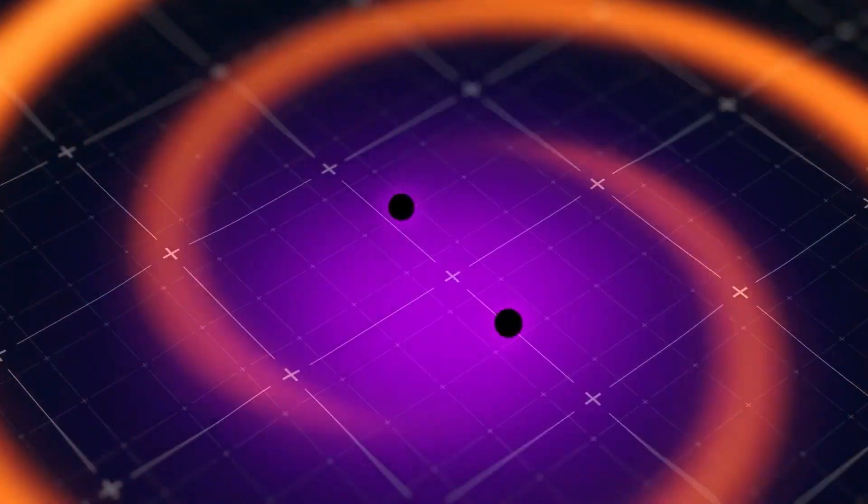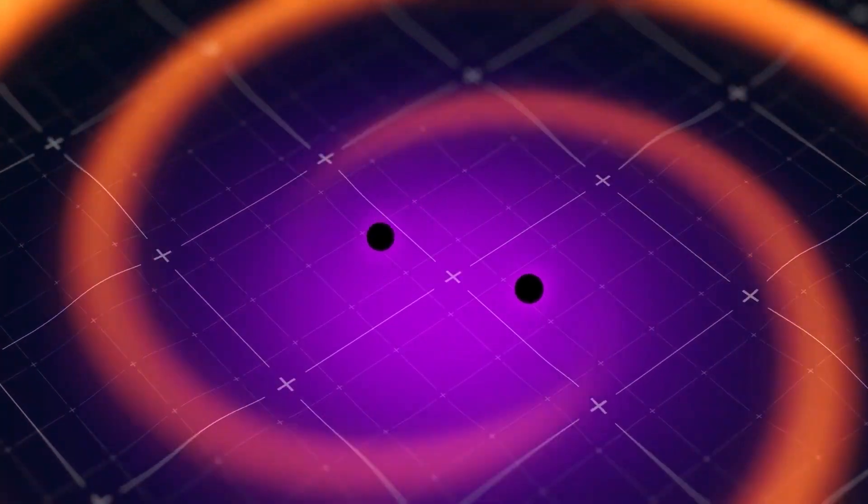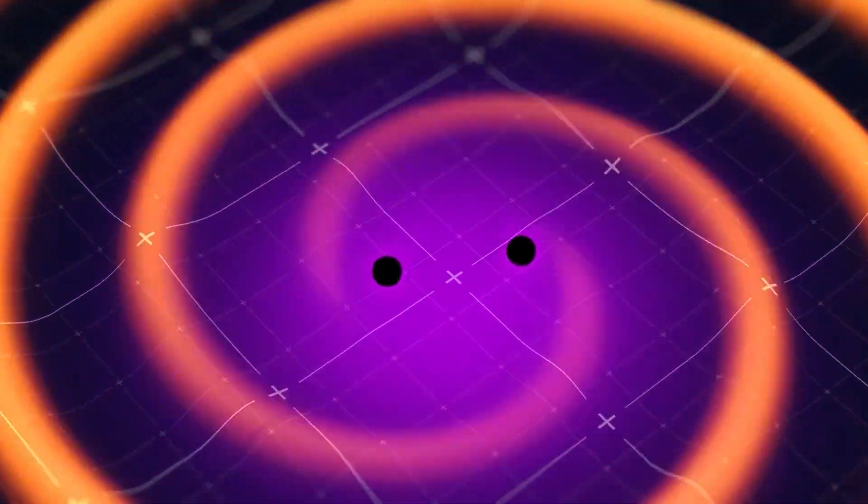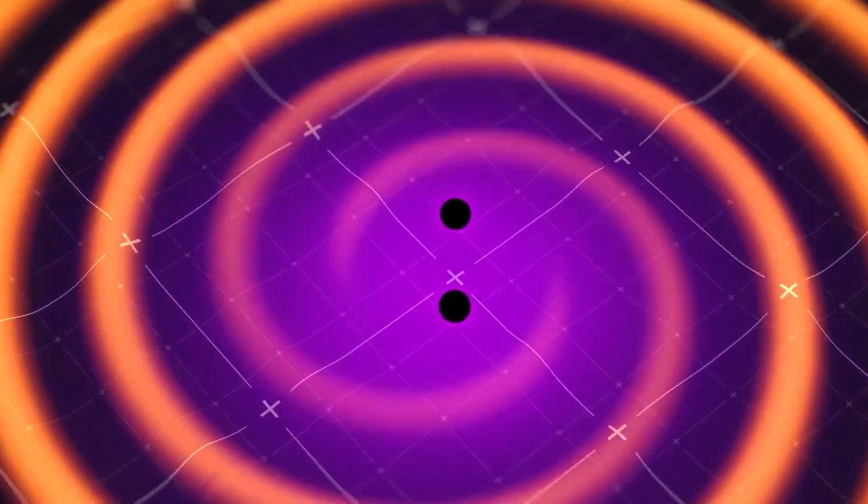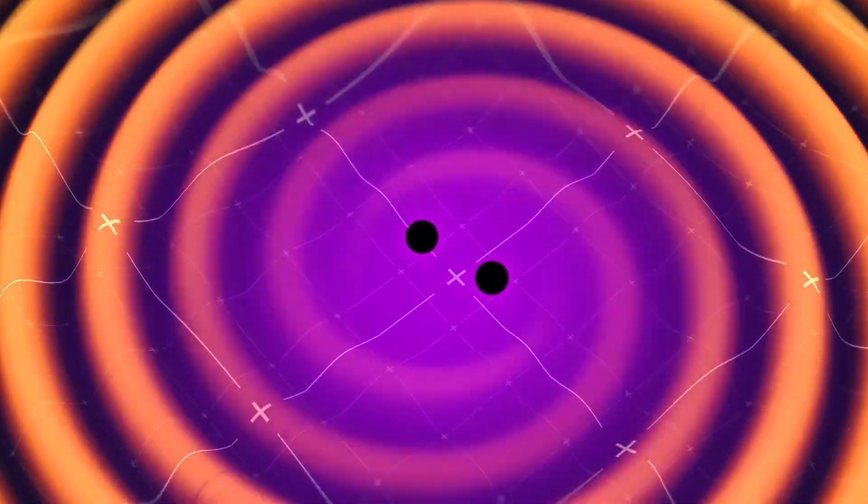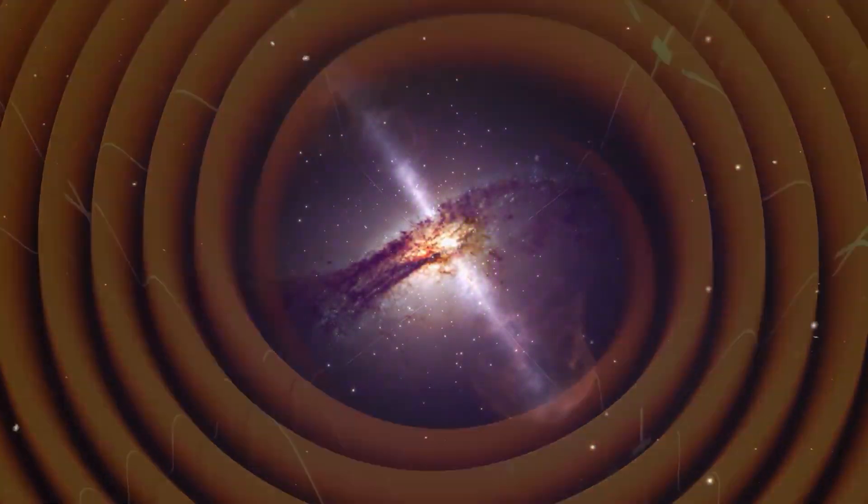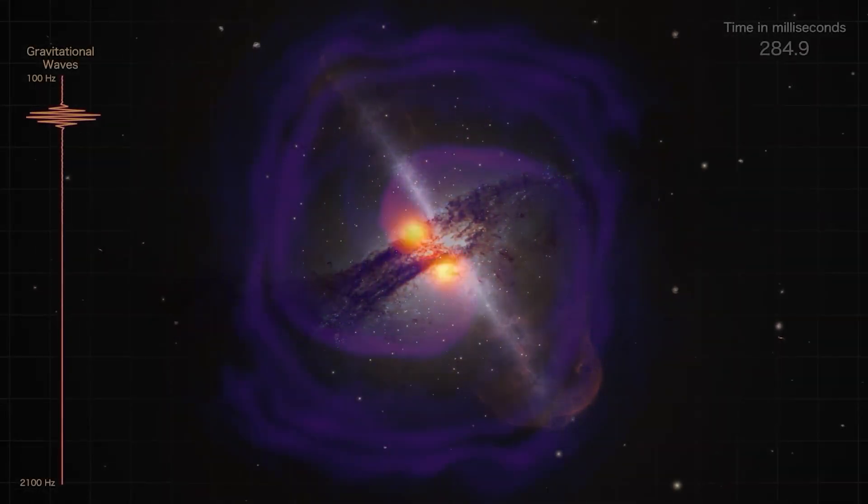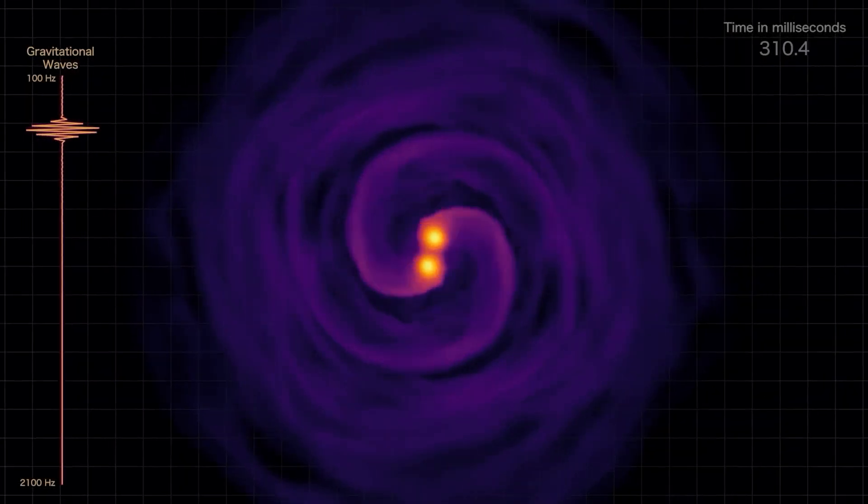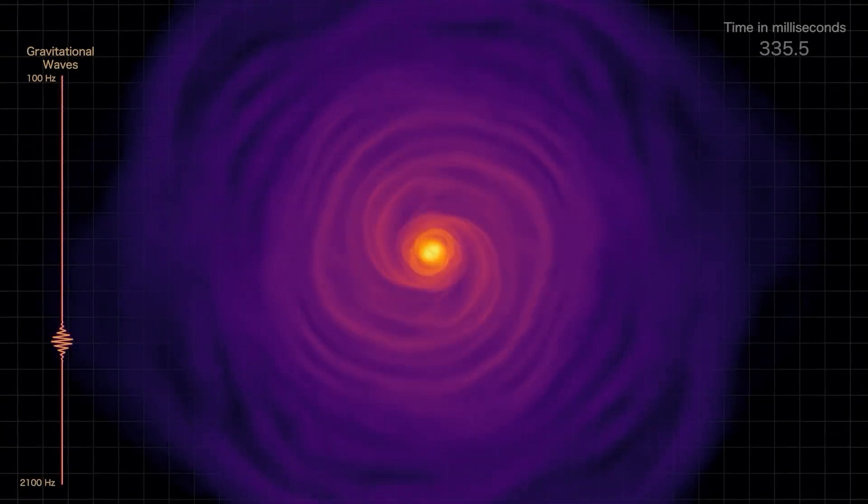Unlike traditional electromagnetic signals, gravitational waves are not impeded by obstacles such as planets, stars, or interstellar dust clouds. This inherent property makes them an attractive choice for long-distance communication, allowing messages to traverse the cosmic landscape without the distortion or attenuation that electromagnetic waves might experience.